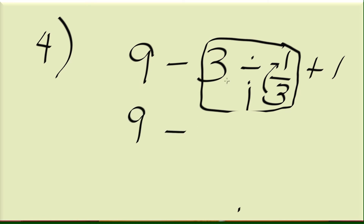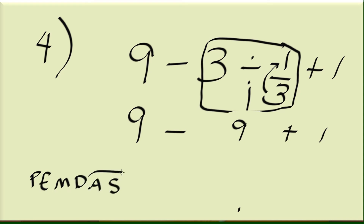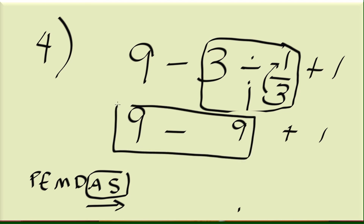So 3 divided by 1 third is 9. Rewriting: it's 9 minus 9, plus 1. Between addition and subtraction, if they are on the same level, you have to do left to right — they are of equal importance or precedence. So whichever comes first: 9 minus 9 is 0, and then 0 plus 1 is equal to 1. So 1 is the final answer for number 4.